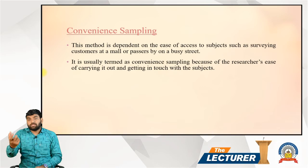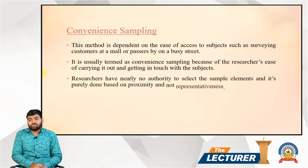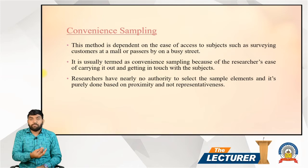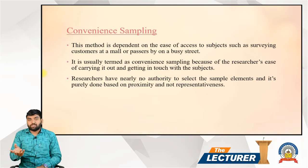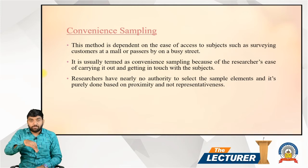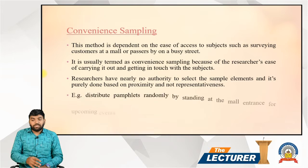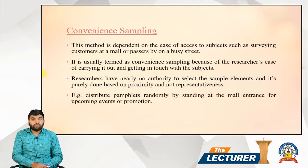It is called convenience sampling because it is convenient for the researcher to carry it out and get in touch with the subjects. The researcher has nearly no authority to select the sample elements — it is purely done based on proximity and non-representativeness. For example, distributing pamphlets randomly by standing at the mall entrance for an upcoming event or promotion — that is a convenience sampling example.